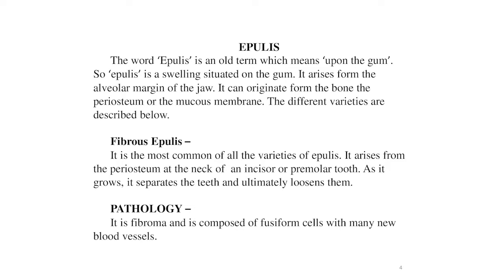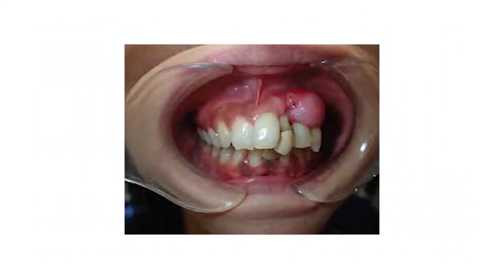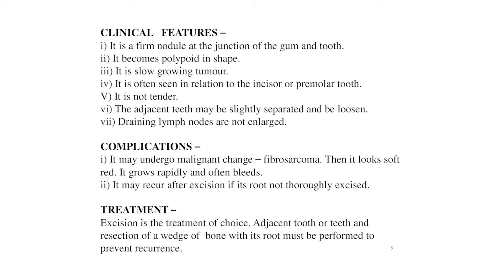Here is a clear picture showing fibrous epilis over the gum. Clinical features: it is a firm nodule at the junction of the gum and tooth, polypoid in shape, slow growing. It is often seen in relation to the incisor or premolar tooth, is not tender, and the adjacent teeth may be slightly separated and loosened. Draining lymph nodes are not enlarged.